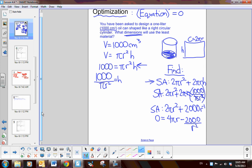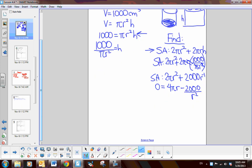Now, we have to solve for zero, so we've got to do some algebra now. First of all, since it's a rational expression, I need to make the denominators the same. So this would be 4 pi r cubed over r squared minus 2,000 over r squared. So, we get zero equals 4 pi r cubed minus 2,000 all over r squared. Multiply both sides by r squared, so I just get zero equals 4 pi r cubed minus 2,000.